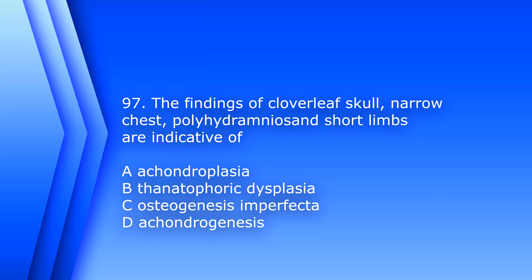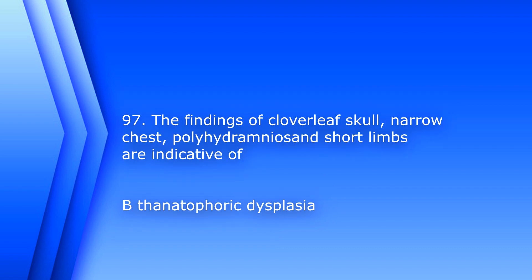Question 97. The findings of cloverleaf skull, narrow chest, polyhydramnios, and short limbs are indicative of? A. Achondroplasia. B. Thanatophoric dysplasia. C. Osteogenesis imperfecta. D. Achondrogenesis. The answer is B, thanatophoric dysplasia.